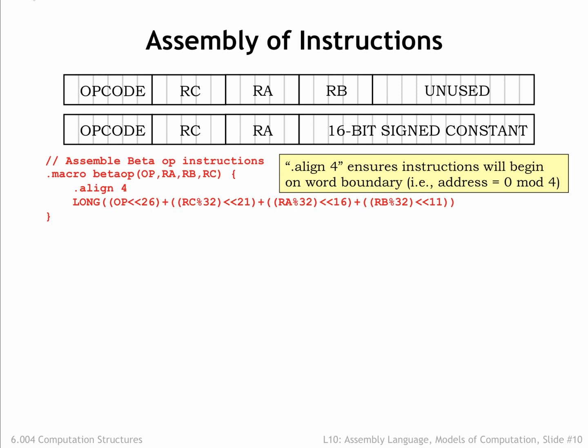That's followed by an invocation of the LONG macro to generate the 4 bytes of binary data representing the value of the expression shown here. The expression is where the actual assembly of the fields takes place. Each field is limited to the requisite number of bits using the modulo operator, then shifted left to the correct position in the 32-bit word.